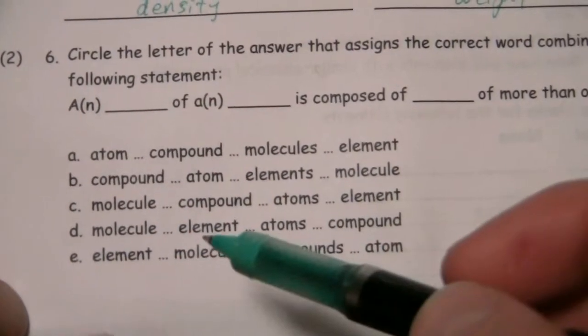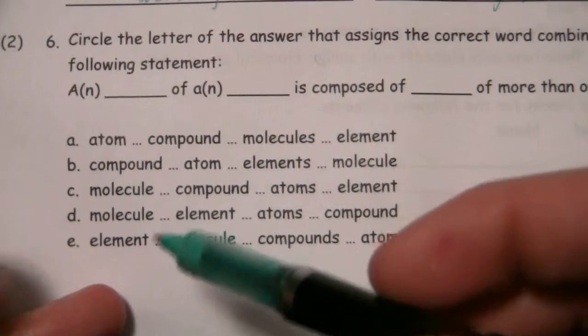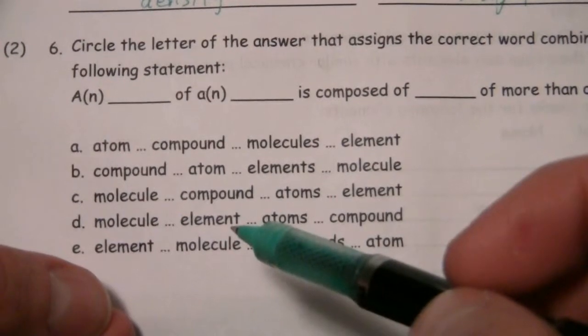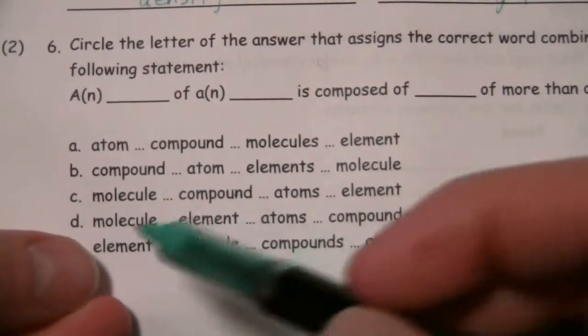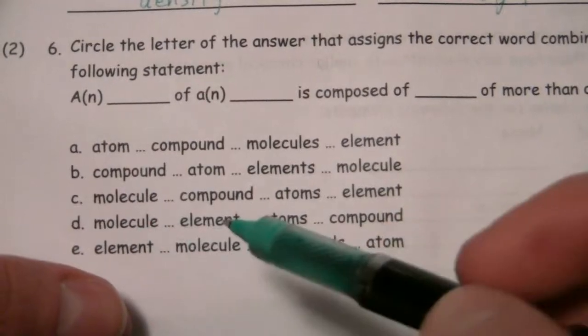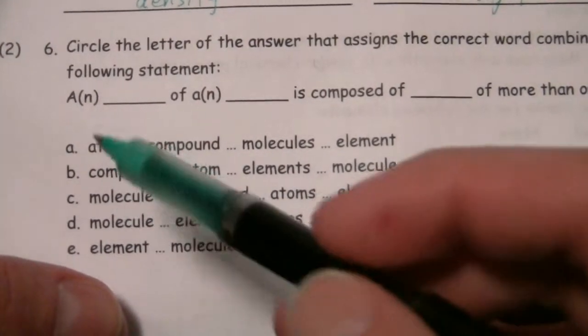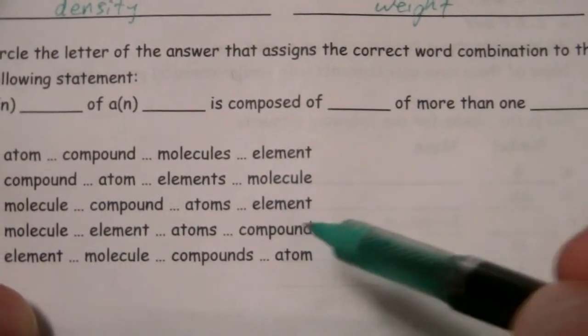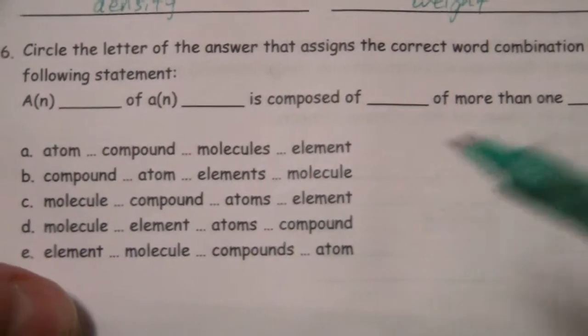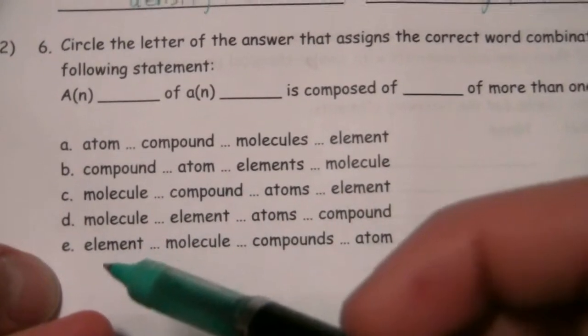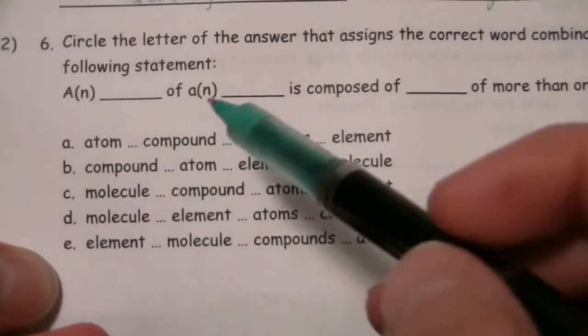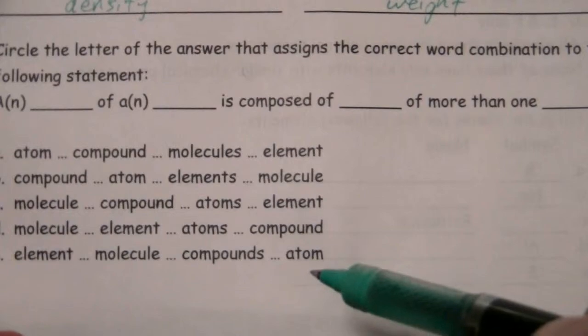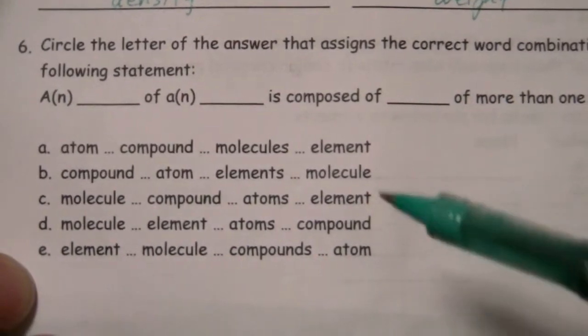Let's go ahead and look at the other two to verify that C would be the best answer. A molecule of an element, right off the bat, that doesn't quite sound very good, because elements, you'd have atoms, not molecules. A molecule of an element is composed of atoms of more than one compound. No, an element would only have one type of atom, so that doesn't work. And an element of a molecule is composed of compounds of more than one atom. No, that doesn't work either.